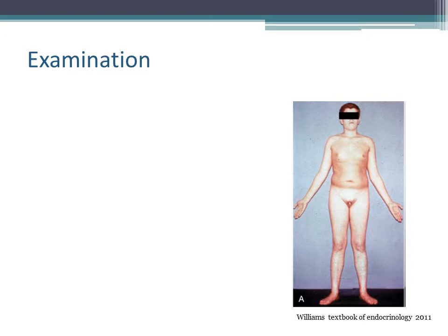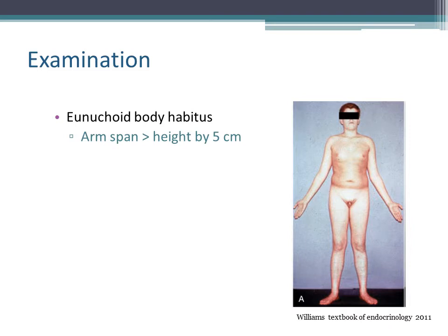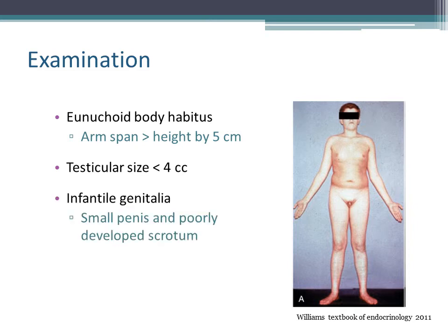On examination, a young boy with Kallmann syndrome has eunuchoid body habitus, where the arm span is greater than the height by 5 centimeters, which we measure in the clinic. Testicular size is less than 4 cc, which is the infantile size. Patients typically have infantile genitalia, small penis, and poorly developed scrotum. They also lack body and facial hair and can have gynecomastia.